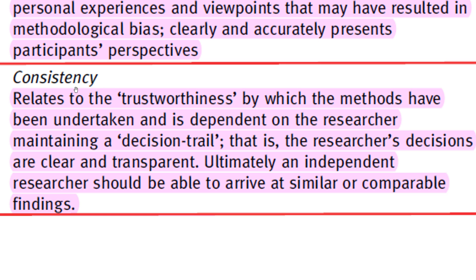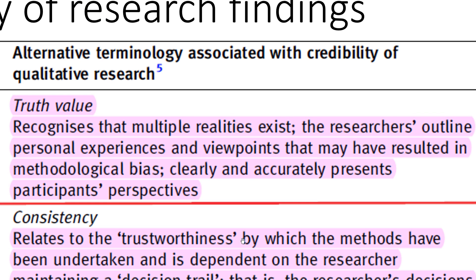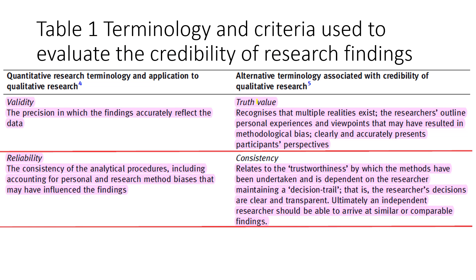Another thing to look for in qualitative research is consistency, which relates to trustworthiness. The methods must be undertaken with the researcher maintaining a decision trail — that is, the researcher's decisions are clear and transparent. Ultimately, an independent researcher should be able to arrive at similar or comparable findings. This is how we look at consistency in qualitative research, as opposed to reliability in quantitative research.